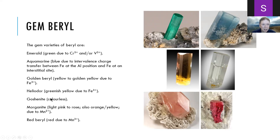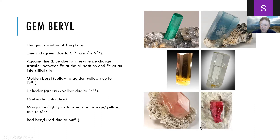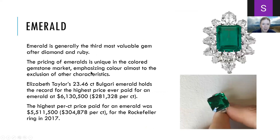We also have golden or yellow varieties of beryl — golden beryl or heliodor — where the golden color comes from trivalent iron replacing aluminum. Goshenite is colorless beryl. Morganite is pink because of divalent manganese; when we replace trivalent aluminum with a divalent cation, we add a sodium atom in the channel for charge balance. The final variety is red beryl, which is red because of trivalent manganese replacing aluminum at the octahedral site.